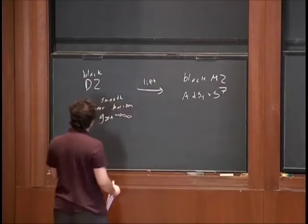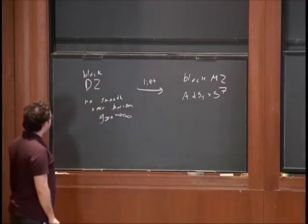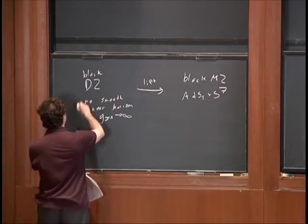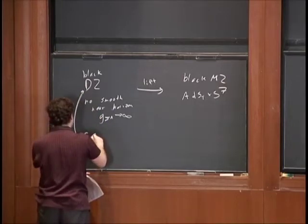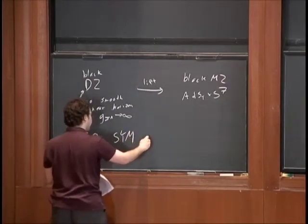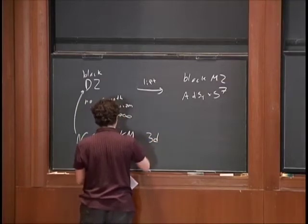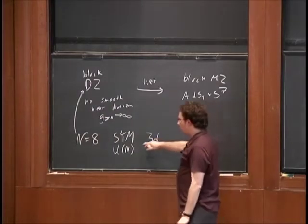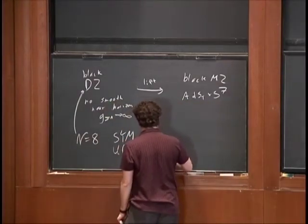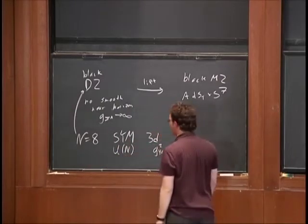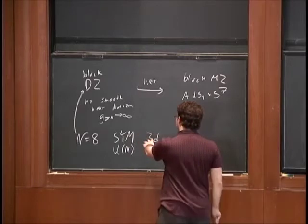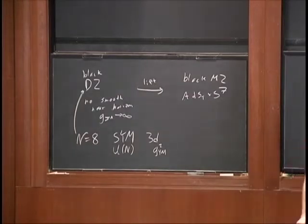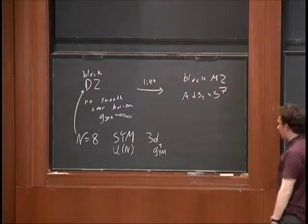In the decoupling limit, the field theory degrees of freedom on the black D2 brane are the N=8 super Yang-Mills in three dimensions with gauge group U(N). The RG flow of this theory is somewhat different than that of the Chern-Simons Yang-Mills theories we talked about in the first and second lecture.